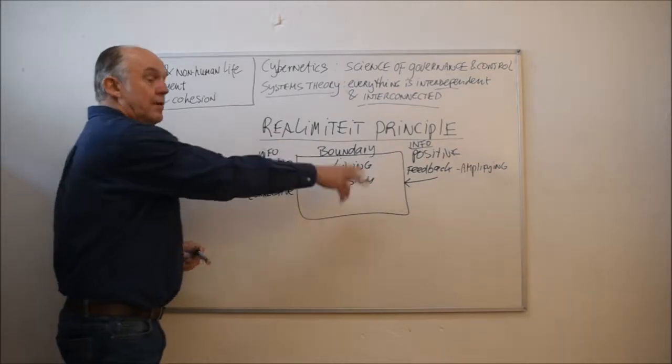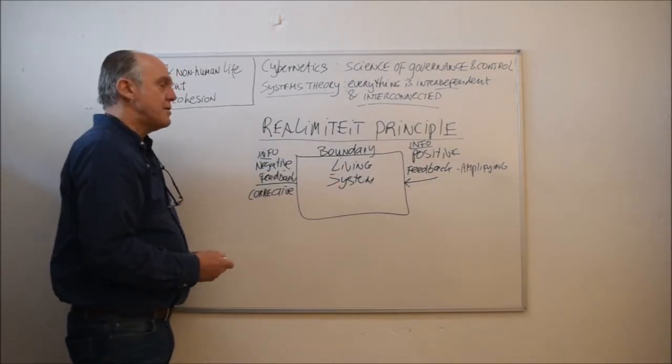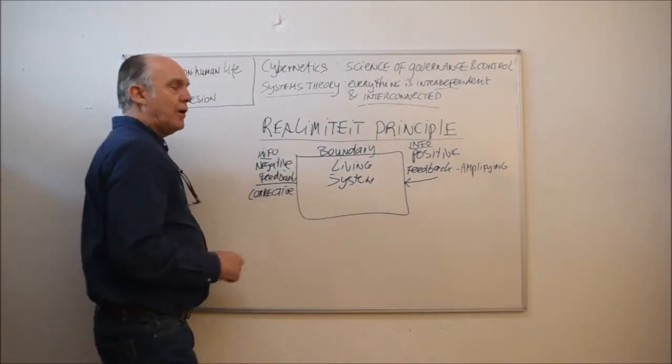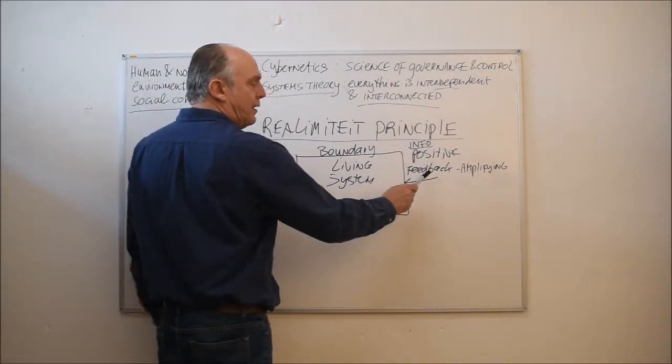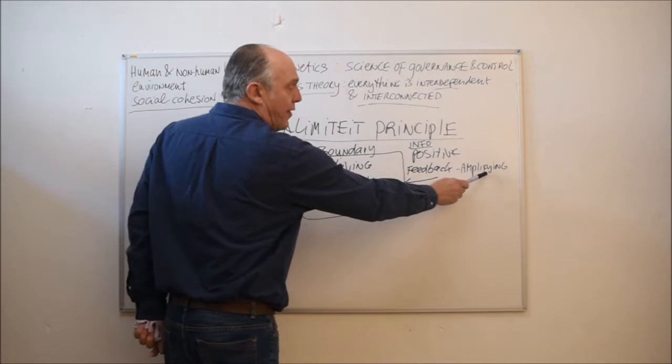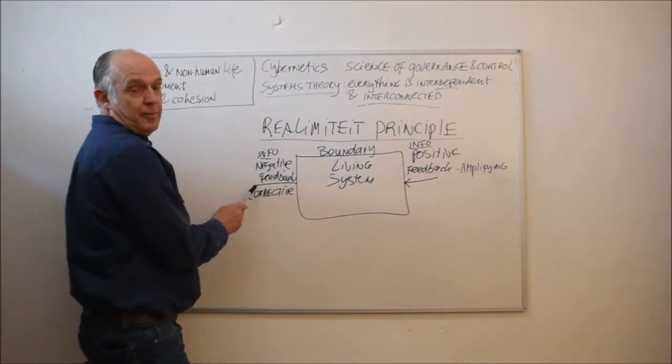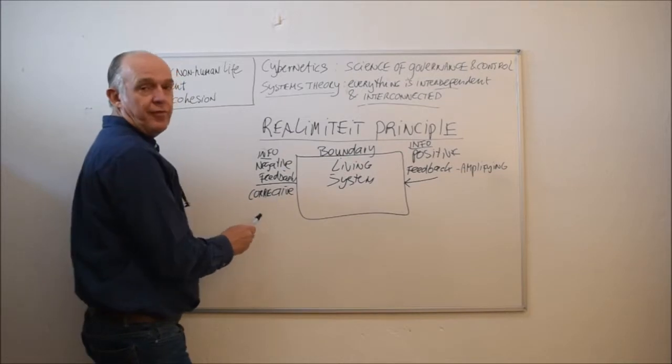So I drew this living system which is dependent on information, and we call this feedback, either positive, which is amplifying, making it stronger, and negative feedback, which is the corrective feedback.